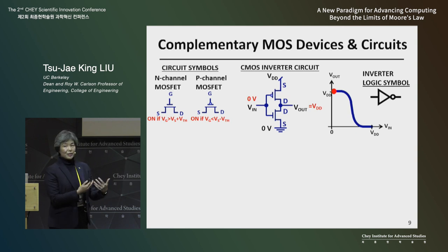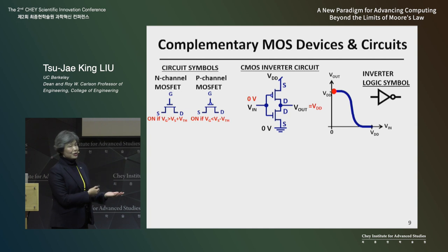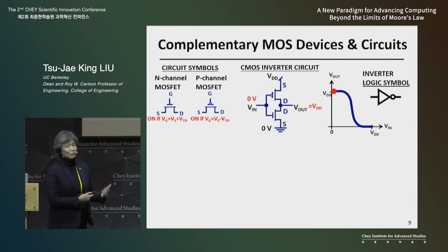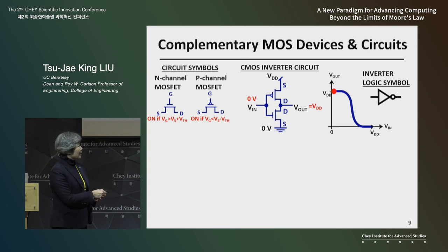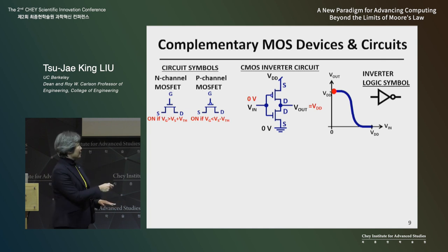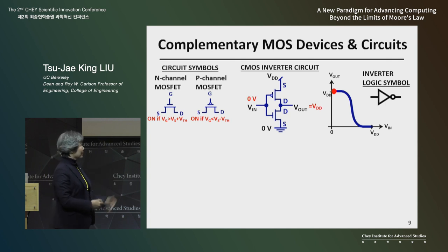We always design a circuit to have complementary pairs of N-channel and P-channel transistors — this is why it's called CMOS. This is the simplest CMOS circuit, where the drain terminal is tied together. For the N-channel device, the source terminal is at the lowest possible potential; but for the P-channel device, the source is at the highest possible potential. The gates are tied together.